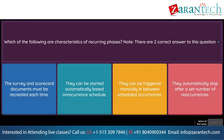Question. Which of the following are characteristics of recurring phases? Note, there are two correct answers. Option 1: The survey and scorecard documents must be recreated each time. Option 2: They can be started automatically based on a recurrence schedule. Option 3: They can be triggered manually in between scheduled occurrences. Option 4: They automatically stop after a set number of re-occurrences.